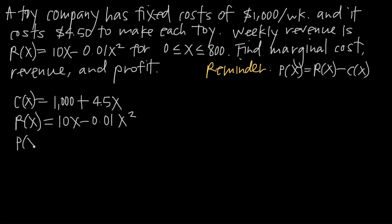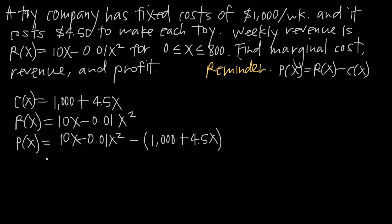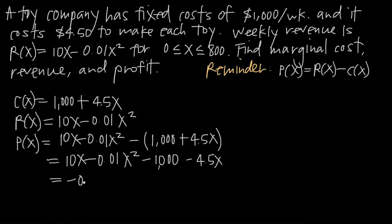To find the profit function, remember that profit is always revenue minus cost — how much money you bring in minus your expenses, leaving what you walk away with. So profit P(x) = (10x − 0.01x²) − (1,000 + 4.5x). It's important to put parentheses around the entire cost function so we distribute the negative sign. Distributing, we get 10x − 0.01x² − 1,000 − 4.5x. Putting terms in order: P(x) = −0.01x² + 5.5x − 1,000.